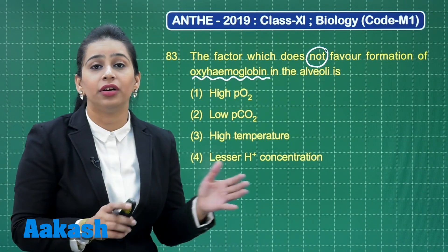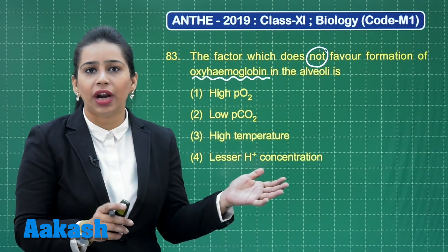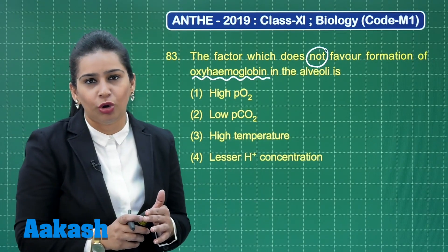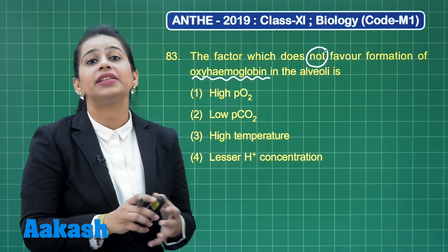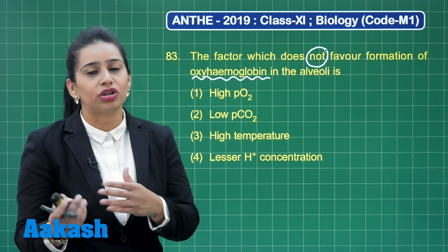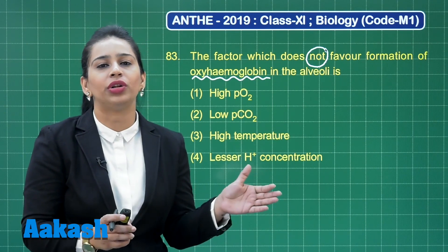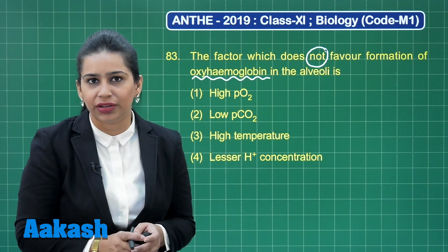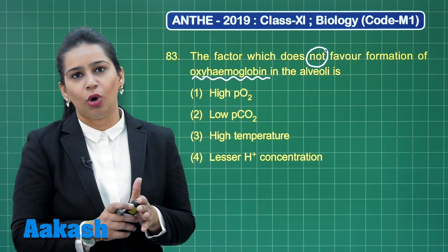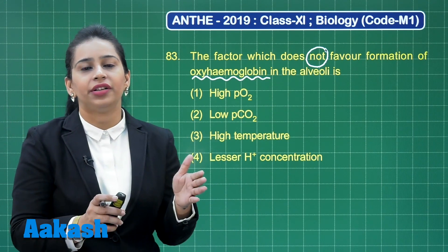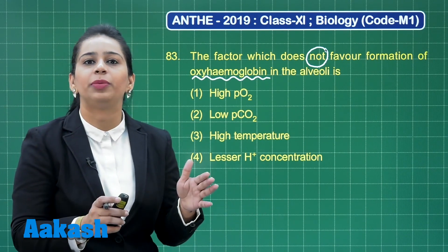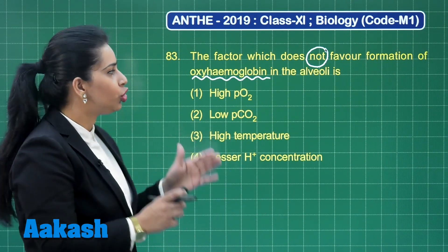As we have already learnt, when we draw a graph between the partial pressure of oxygen and percent saturation of hemoglobin, we get a normal sigmoid curve. But this curve can shift to the right or left depending upon the presence or absence of various factors. The association of oxyhemoglobin is represented by a left shift, while the dissociation of oxyhemoglobin is represented by a right shift.